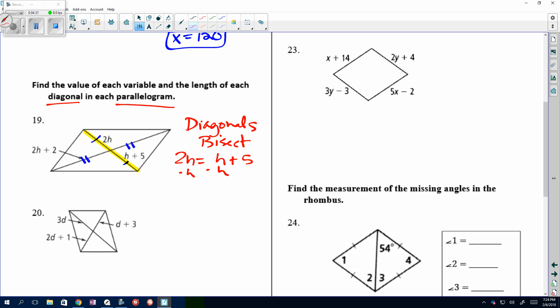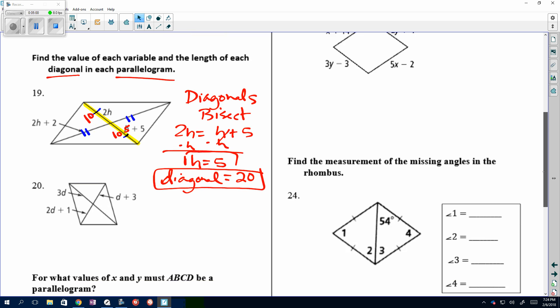So, if I want to find the diagonal, because I want us to find the length of the diagonal, I've got to plug it back in. Well, if this is five, five plus five, that makes it ten. That's ten, so the diagonal would be twenty. So, make sure you can do both. You can find the variable, and you can find the length of the diagonal. Now, I'll let you try twenty.